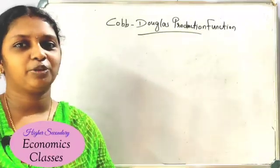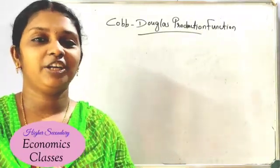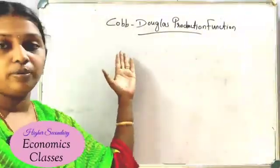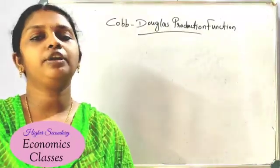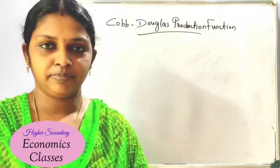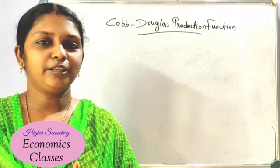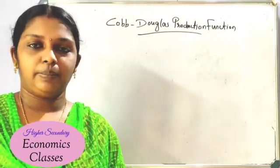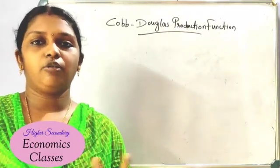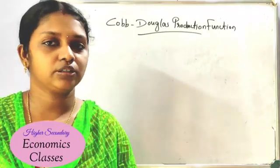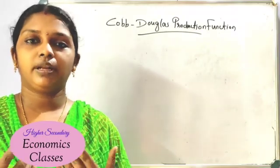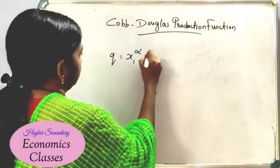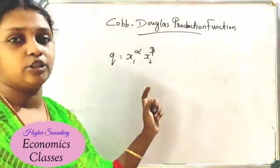What is Cobb-Douglas Production? The concept is about Cobb-Douglas — they are called production functions. What is the output produced? Labor and capital. This is the output. The equation represents it as Q is equal to x1 raised to alpha, x2 raised to beta.